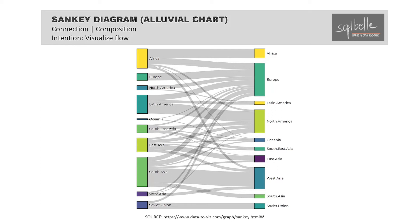This example is from the Data2Viz website and it shows a broad picture of migration. For example, if we look at Africa, we can readily see that the majority migrate to other areas in Africa, but the second biggest proportion migrate to Europe. We also see smaller migrations to other parts of the world.